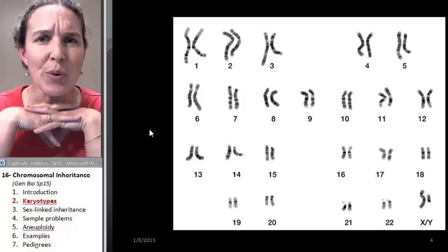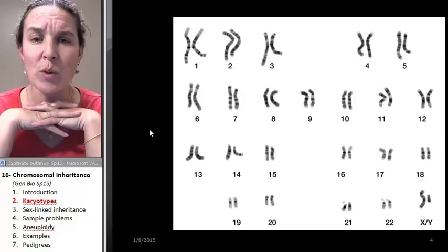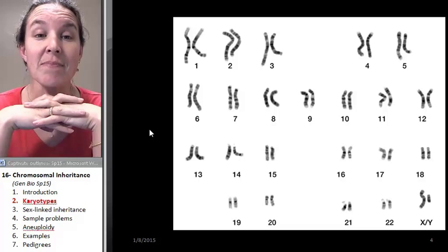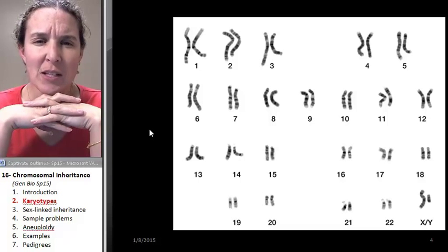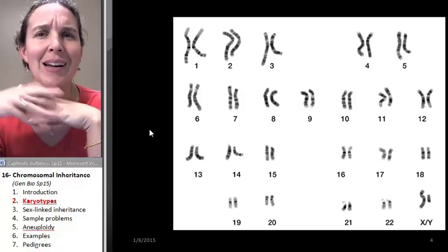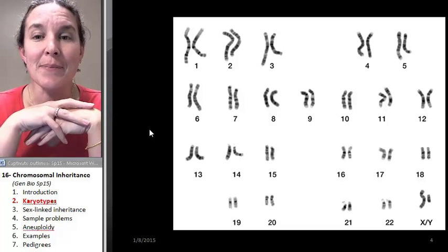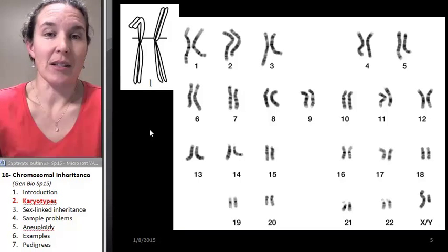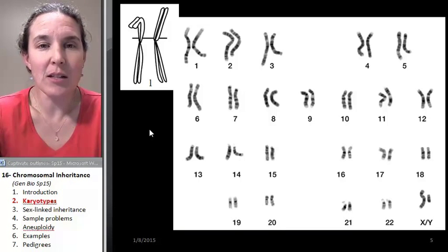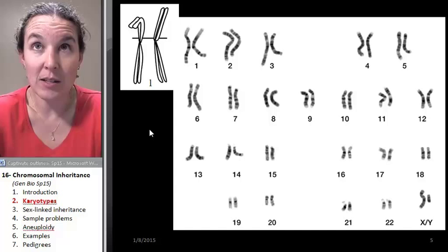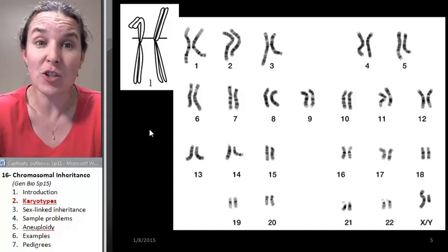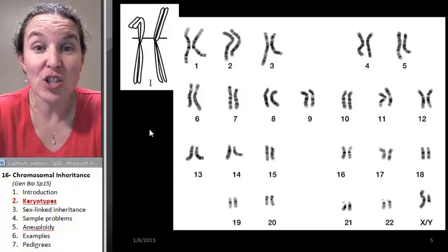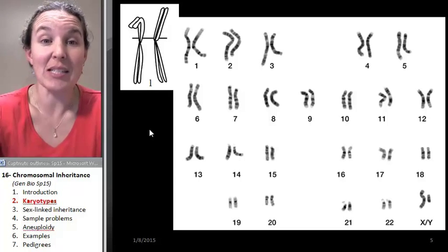I just told you that these chromosomes were taken from a cell in metaphase of mitosis. Is there anything about this that makes you go, yeah, I'm going to call BS on that? Anything? Well, I don't know. For me, I looked at it, and I was like, dude, I'm calling BS on this because I don't see sister chromatids. And if this is a cell in metaphase, there should be sister chromatids.